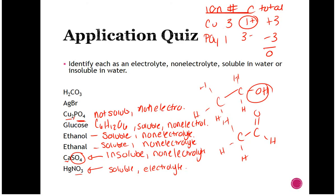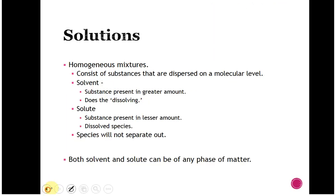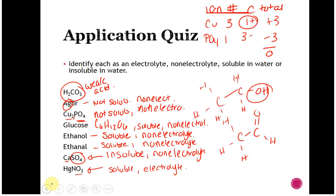Silver bromide: bromide is usually a soluble ion, but here it is paired with silver, which means it will not be soluble. So silver bromide is not soluble in water, and it is a non-electrolyte because it cannot break apart. Carbonic acid is the tricky one. Acids in general are kind of soluble, and carbonate with a group one metal is soluble. This is a weak acid, so it is soluble — but because it's a weak acid, it is a weak electrolyte.